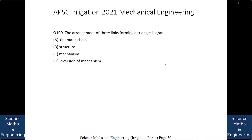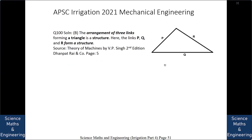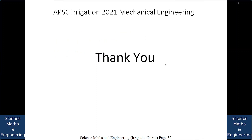The arrangement of three links forming a triangle is: A. kinematic chain, B. structure, C. mechanism, or D. inversion of mechanism. The answer is B: structure. Since the links form a triangle, they have no relative motion between each other — they are locked together, forming a structure. With this we come to an end of the APSC Irrigation 2021 Mechanical Engineering paper. Thank you.